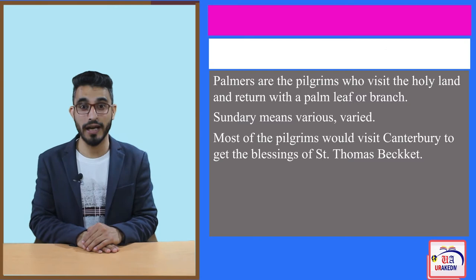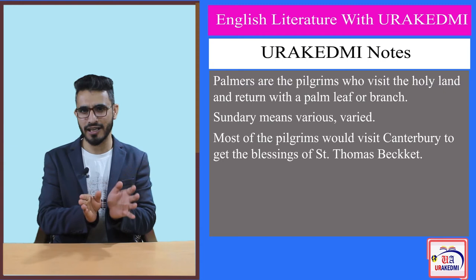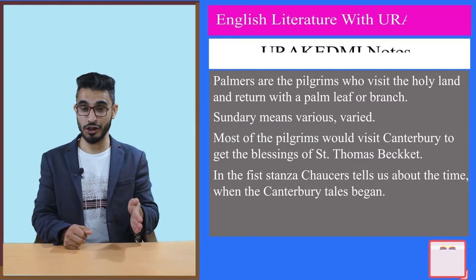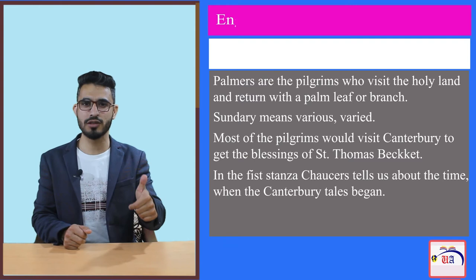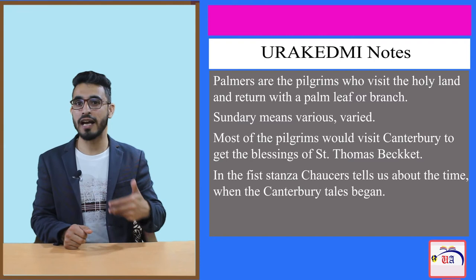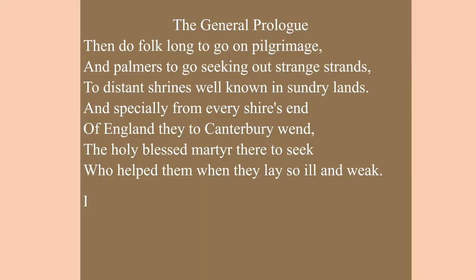That was the beginning of the General Prologue. In these few lines, Geoffrey Chaucer does not tell us a lot about characters, but he tells us when this pilgrimage starts — in the month of April. The month of April is the month of regeneration, which regenerates every type of life: the life of animals, the life of plants, and the life of human beings. Everything is energized and becomes lively.